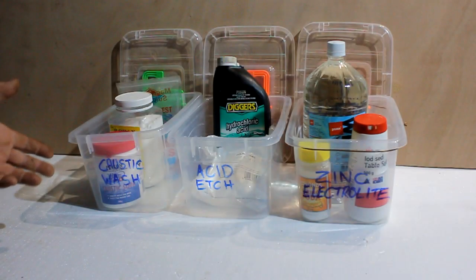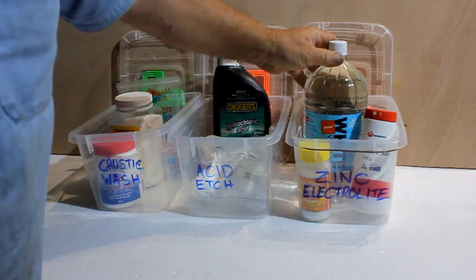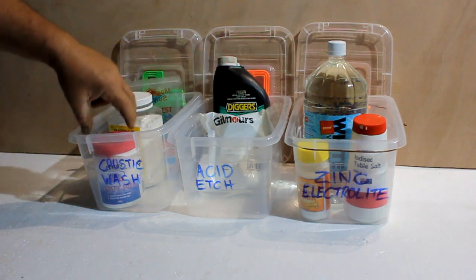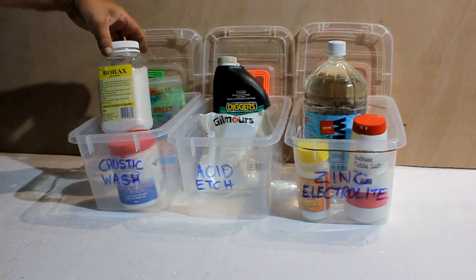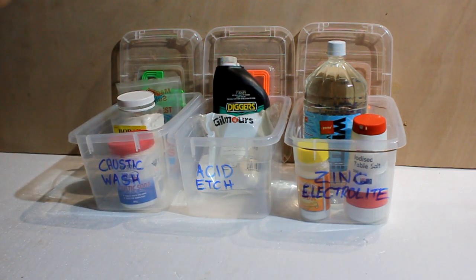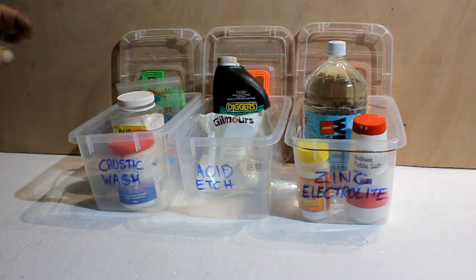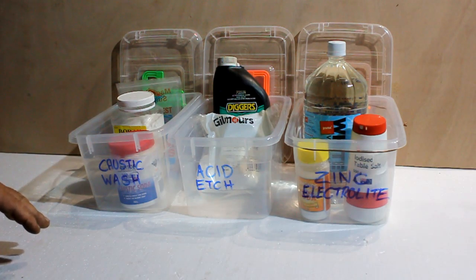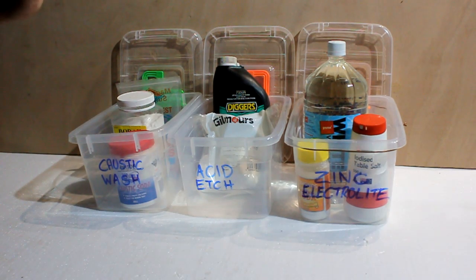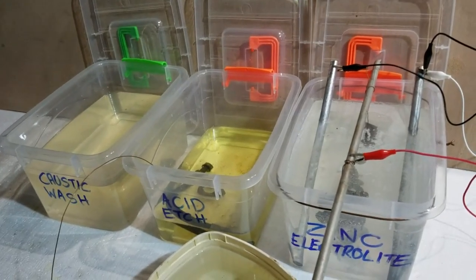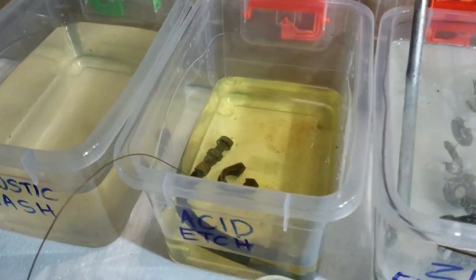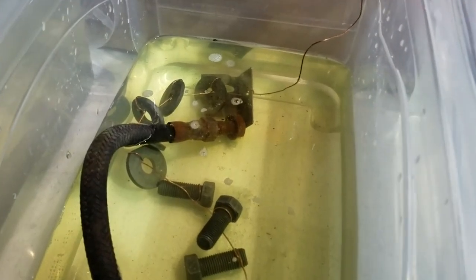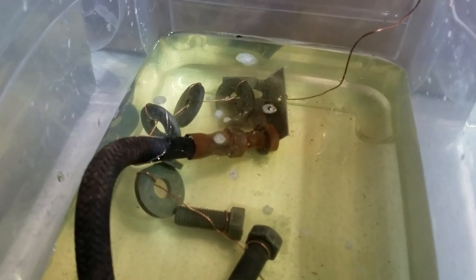Most of these are household items. Many of these things can be found in the kitchen or the laundry and these are all the ingredients needed for zinc plating. I've got some duplicates here because there are choices in the chemicals that you use. Basically what we're trying to do is clean the parts aggressively with a caustic wash that's going to remove any grease and oils. Then we're going to etch the surface with an acid etch and that will prepare them to be zinc plated in the electrolyte.